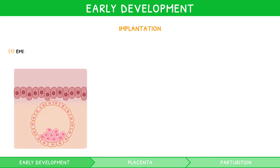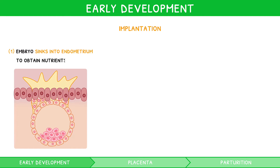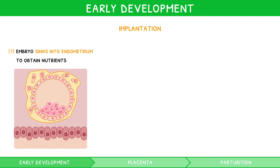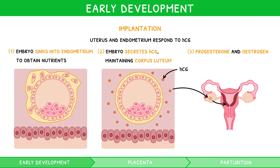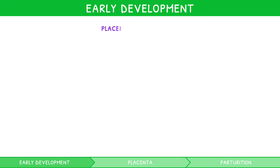During implantation, the embryo sinks into the endometrium to obtain further nutrients. The uterus and endometrium can respond appropriately due to a hormone called human chorionic gonadotrophin (HCG), which is produced by the embryo. It stimulates the corpus luteum to continue to produce progesterone and oestrogen, thus maintaining the uterus and preventing normal menstruation. Once large enough, the embryo requires additional support to survive, triggering the next stage – early placental development.